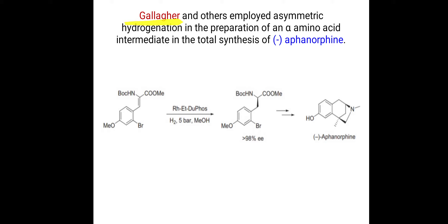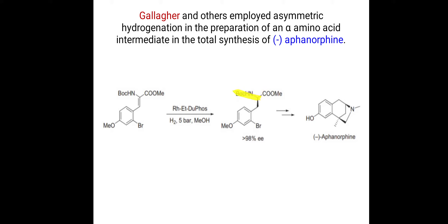Researcher Gallagher and others employed asymmetric hydrogenation in the preparation of an alpha-aminoacid intermediate in the total synthesis of minus-ephanorphine. The starting compound is an alpha-dehydroaminoacid. It undergoes hydrogenation in the presence of a rhodium ethyl DUPHOS catalyst. The carbon-carbon double bond undergoes hydrogenation — hydrogen gets added across it — and a chiral center is formed at the carbon attached to nitrogen. The intermediate is obtained in greater than 99% enantiomeric excess.